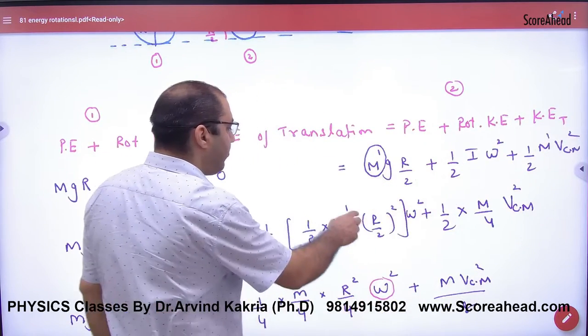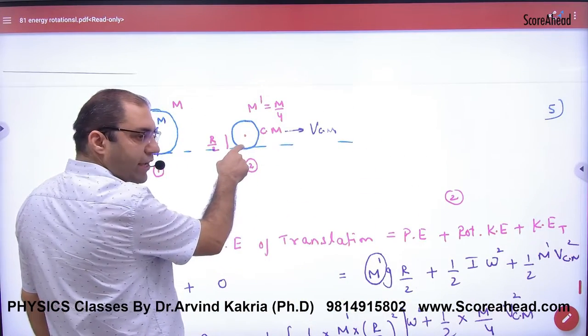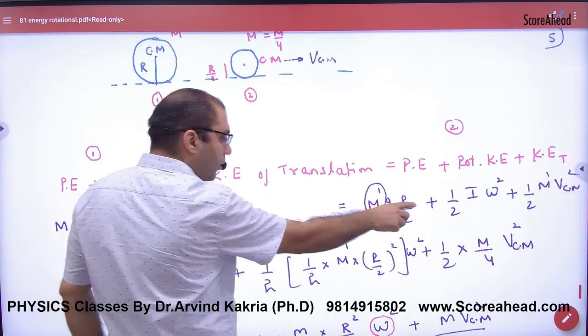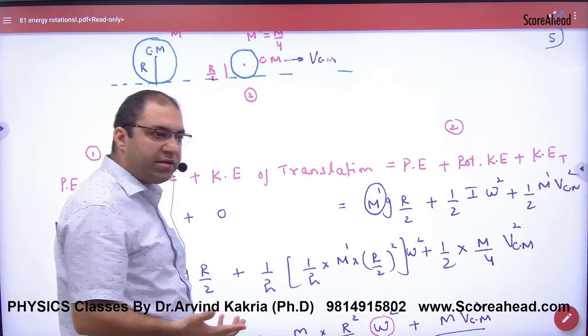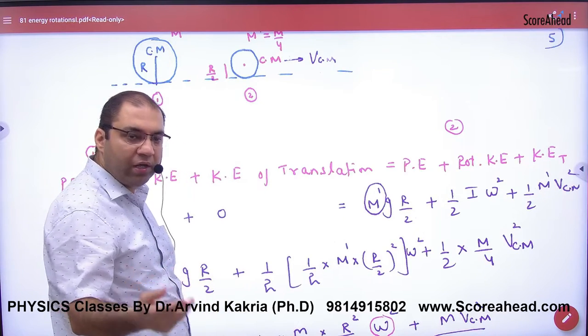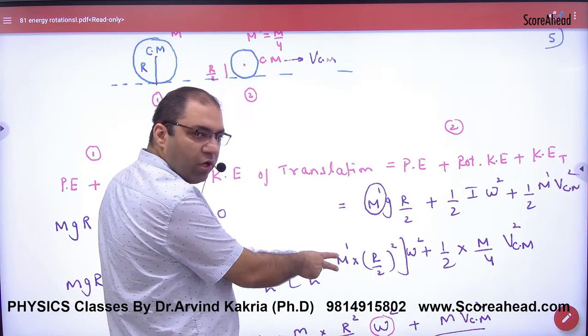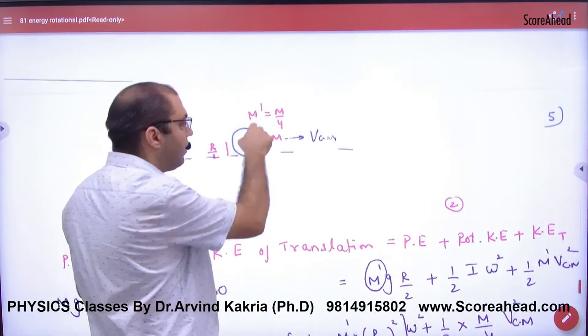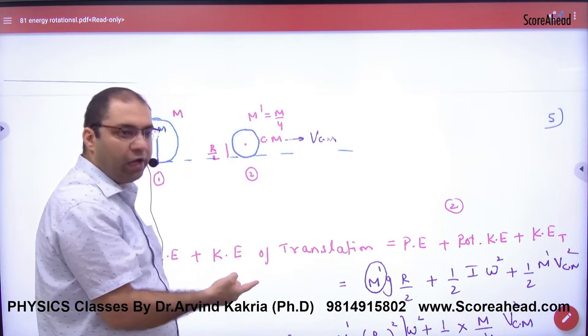So M dash here is M by 4. And when we put moment of inertia here, I, what will I put? Half M R². But what will I put? M by 4. And what will I put? R by 2. Because here, mass is M by 4 and the radius is R by 2. So the point is coming here.